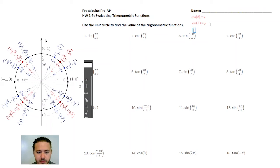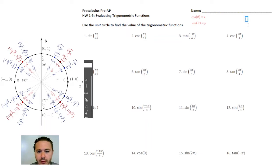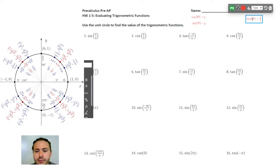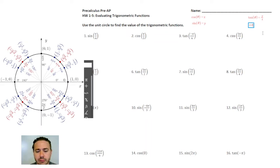Tangent of theta is going to be y over x. Cotangent theta, which is the reciprocal of tangent, is going to be x over y.